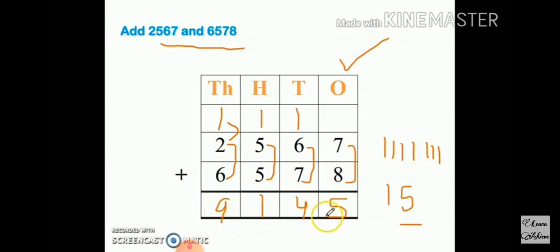Thousands we have to add: 1 plus 2 equals 3, 6, 9. Answer is 9145.